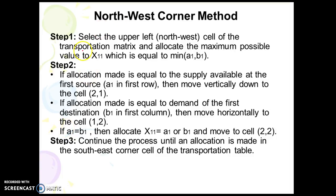First, we select the upper-left (northwest) cell of the transportation matrix and allocate the maximum possible value of x11, which is equal to the minimum of a1 and b1. If the allocation made equals the supply available at the first source (a1) in the first row, then move vertically down to cell 21.